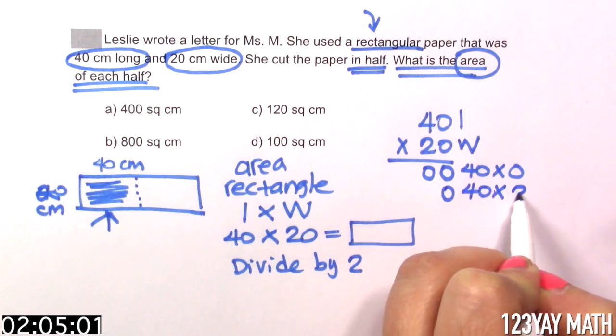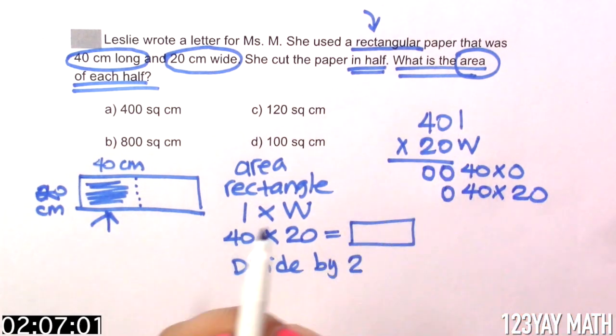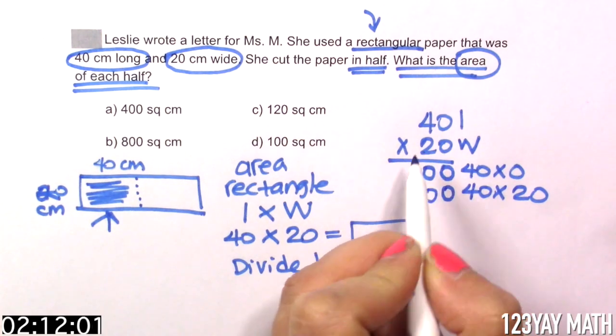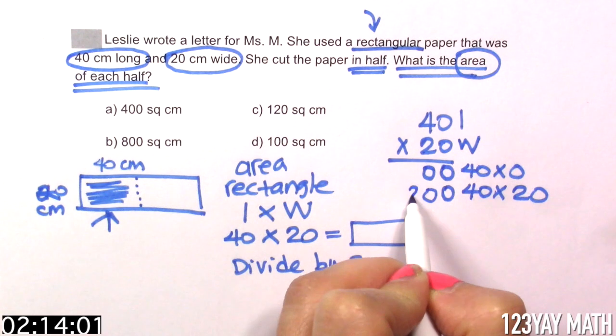And now we're going to multiply 40 times 2. But in reality, we're multiplying 40 times 20. So 2 times 0 is 0. 2 times 4 is 8.